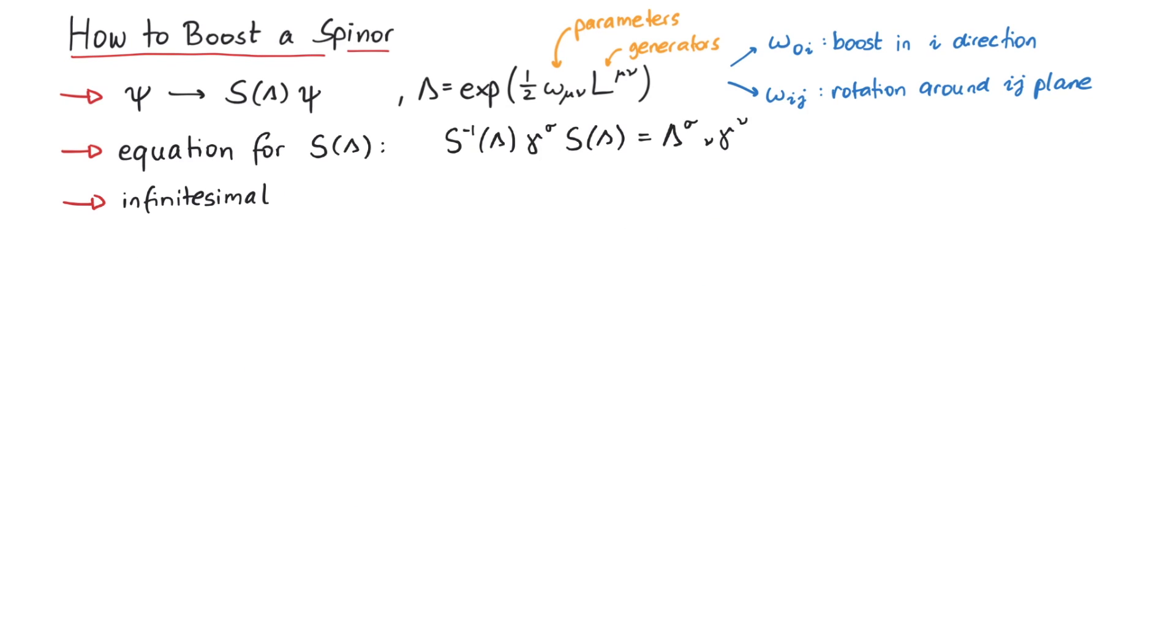In order to solve this, we can use an infinitesimal ansatz, 1 plus epsilon times t. This must work, since no Lorentz transformation just means that S is the identity matrix. If we use this ansatz up to first order in epsilon, we get the equation that the commutator of gamma sigma with t must be equal to omega sigma nu times gamma nu.